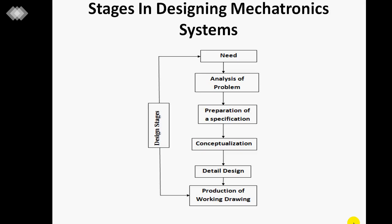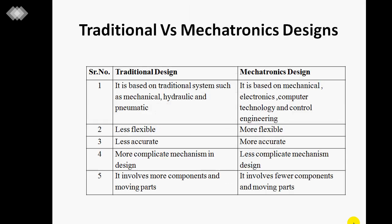Stage seven is the production of working drawings. The finalized drawings of the components are prepared and communicated to the manufacturer. This includes each component drawing as well as assembly details, which are shared with all manufacturers to simplify the product. These are the stages involved in the mechatronics system.